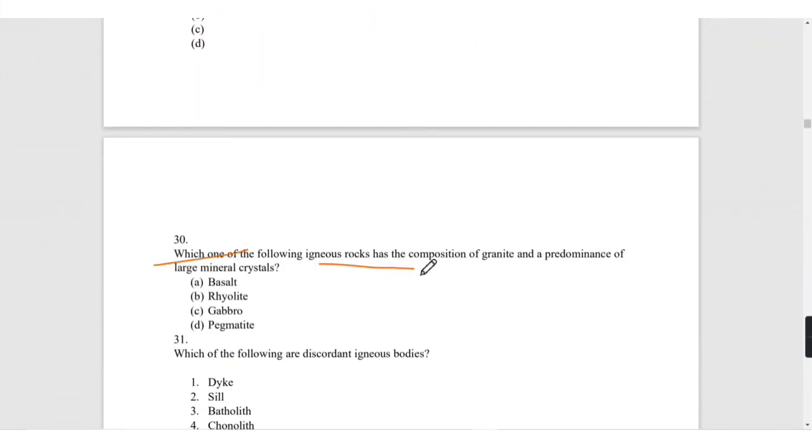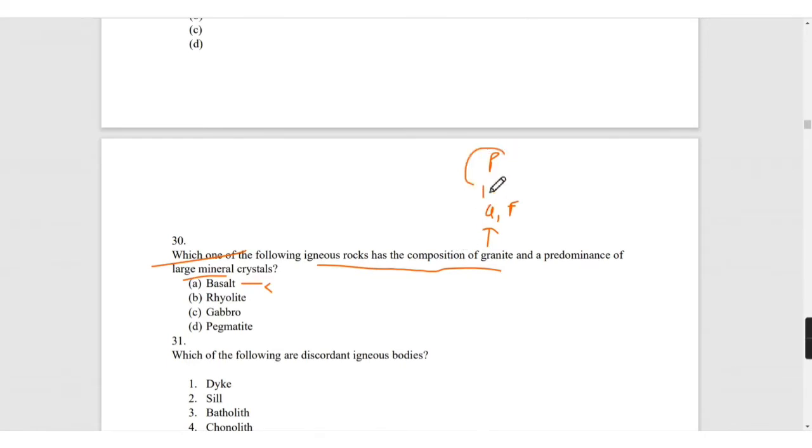Which of the following igneous rock has composition of granite and a predominance of large mineral crystals? We know that granite consists of quartz and feldspar. Basalt is not the answer. Also granite is a plutonic rock. If it is a plutonic rock, it will be definitely coarse-grained, meaning crystals will be bigger. Pegmatite will be the right answer because it will contain composition of quartz and feldspar and will be coarse-grained.